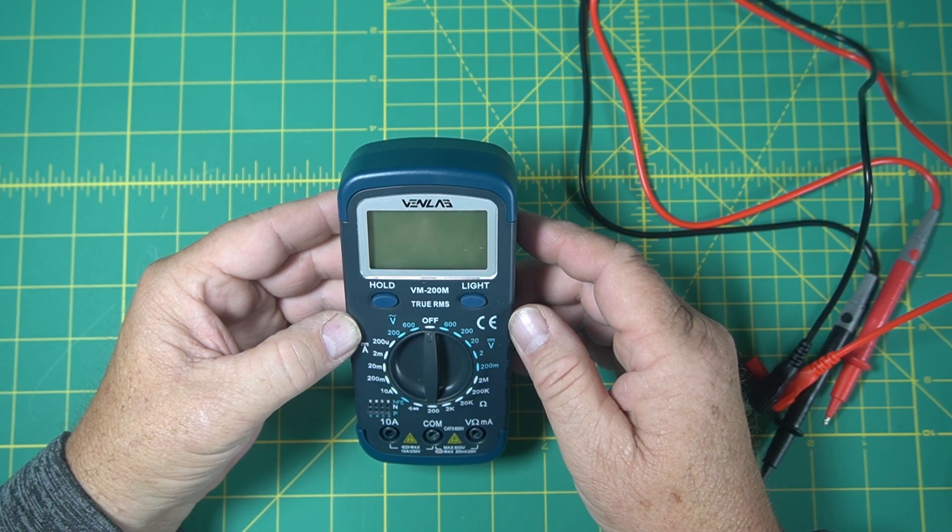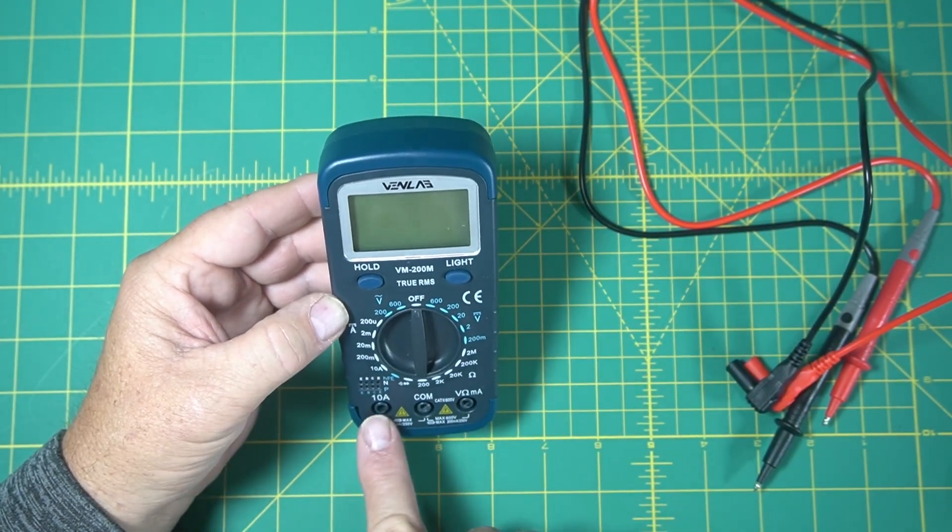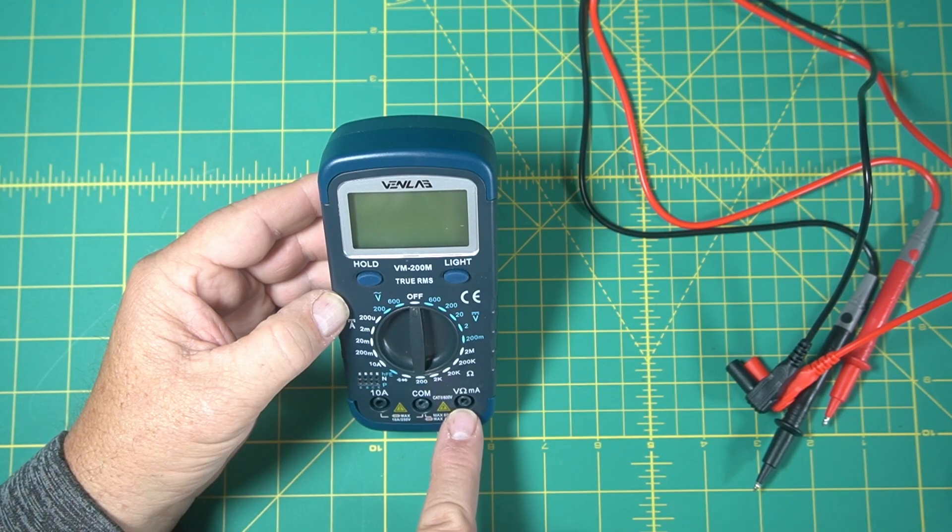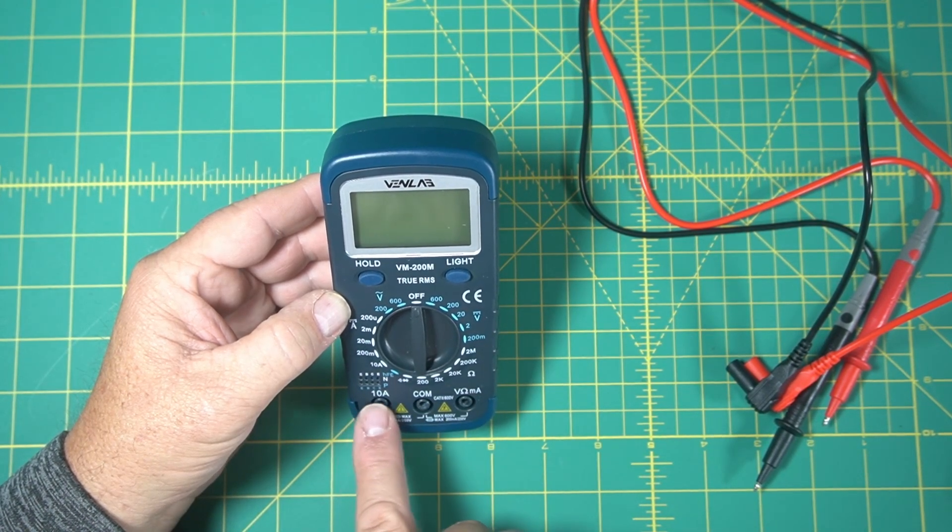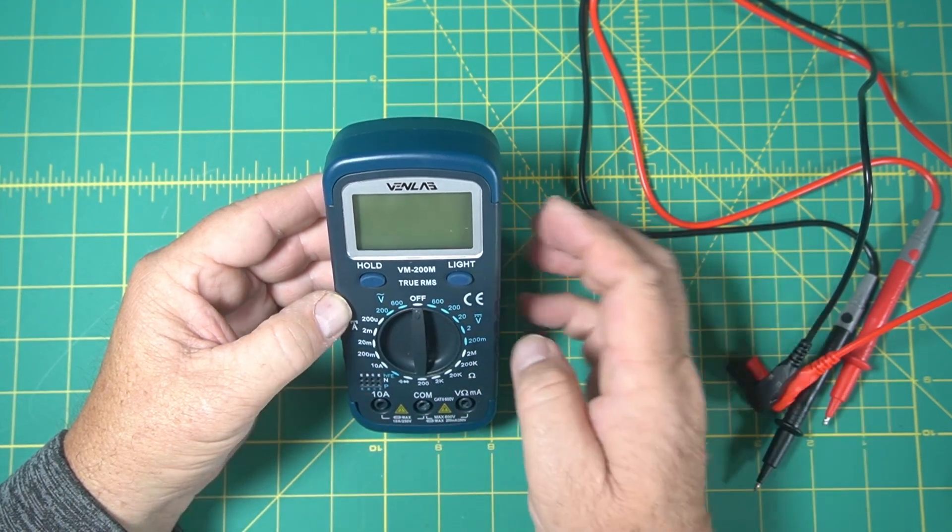We'll turn that on in a minute and see how that is. Here's your hold button, your light button, your 10 amp, your common, and your voltage, your ohms, and your milliamps. This is for your amperage. It'll do up to 10 amps. And then you have your transistor tester here.